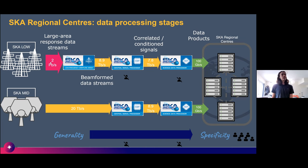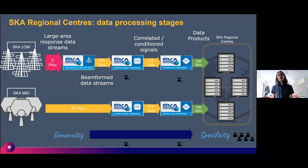On the left you can see the data rates coming straight out of the infrastructure: SKA-Low produces two petabytes per second, and then nine terabytes per second from the beamform data on SKA-Mid. This goes through correlation and then the Science Data Processor. Everything before the green arrow — users will not see and will not have access to that data; it's deleted as soon as the data products are made.